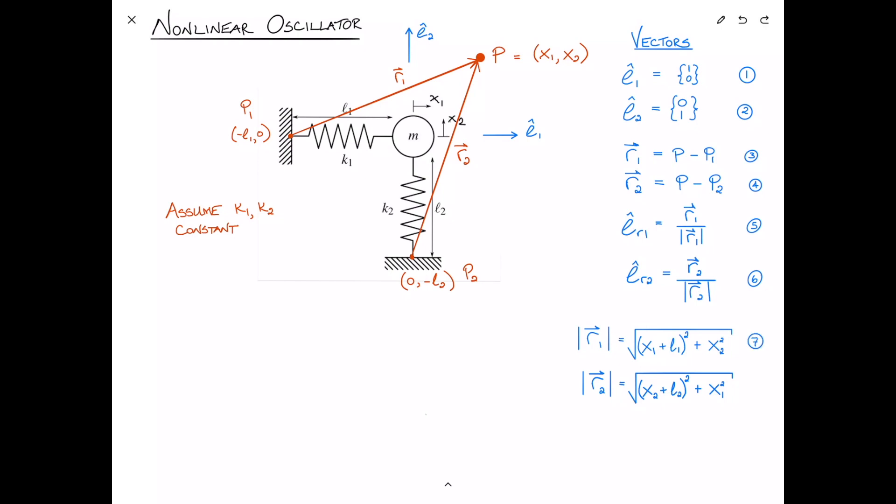Now the kinetic energy is easy to write, it's just T equals 1 half m x1 dot squared plus x2 dot squared. But I don't even want to focus on that right now, because really the problem at hand is let's find the strain energy, and more importantly, let's find the displacement in the springs as a function of x1 and x2.